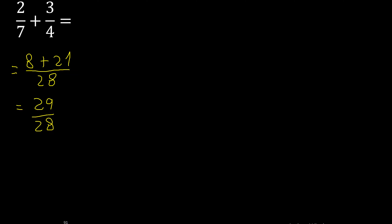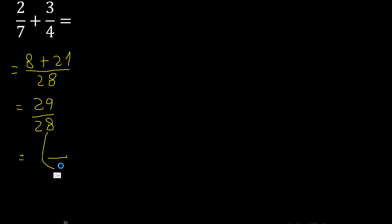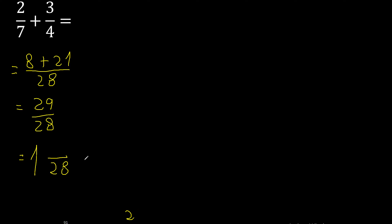29 cannot be simplified because it cannot be divided by the same number. But this number is greater, therefore convert the same number here. 28 multiplied by which number is nearest to 29 but not greater? 28 multiplied by 2 is 56 — it's greater. Multiplied by 1 is 28 — it's not greater. 29 minus 28 is 1.